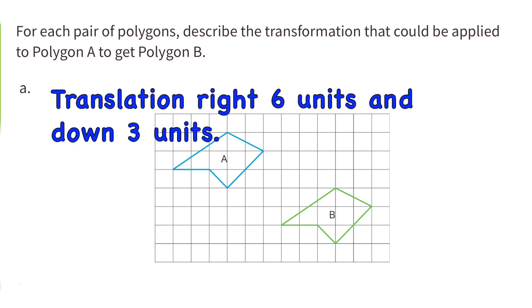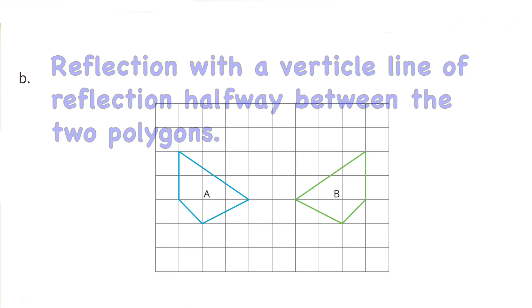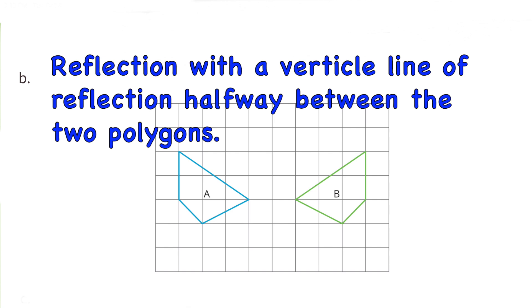A. A translation right 6 units and down 3 units. B. A reflection with a vertical line of reflection halfway between the two polygons.